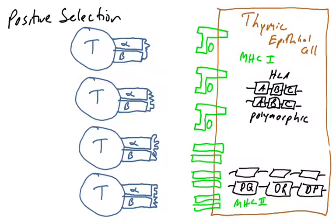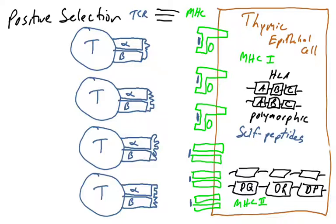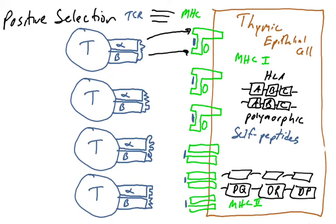What's going to happen during positive selection is your thymic epithelial cells will present self-peptides to your double positive thymocytes. What we're trying to do is test your T cell receptor variable regions to see if they interact with your inherited MHC molecules. For T-cell number one, it checks to see if it binds that first MHC molecule — not testing whether the peptide is self or non-self, but just checking if the alpha and beta chains, when they form the variable region, engage and bind the MHC molecule.